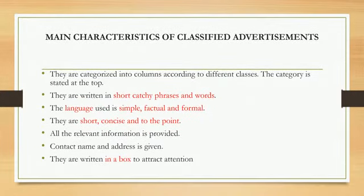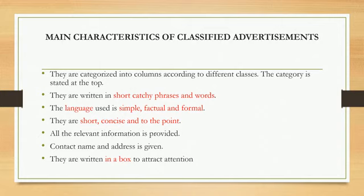Here are the main characteristics of classified advertisements. First, they are categorized into columns according to different classes. The category is stated at the top. They are written in short, catchy phrases and words. The language used is simple, factual and formal. They are short, concise and to the point. All the relevant information is provided. Contact name and address is also given, and they are written in a box to attract attention.